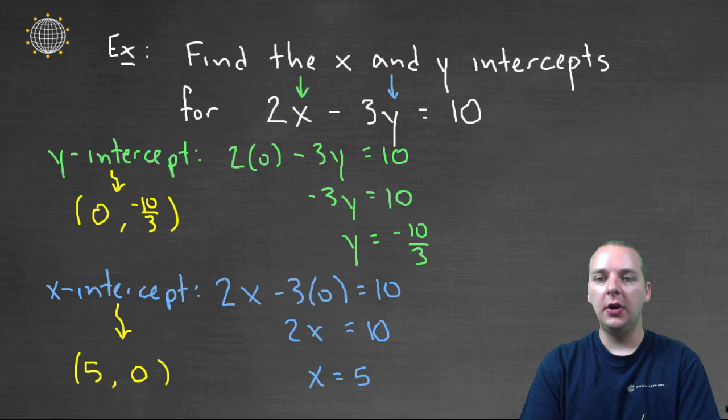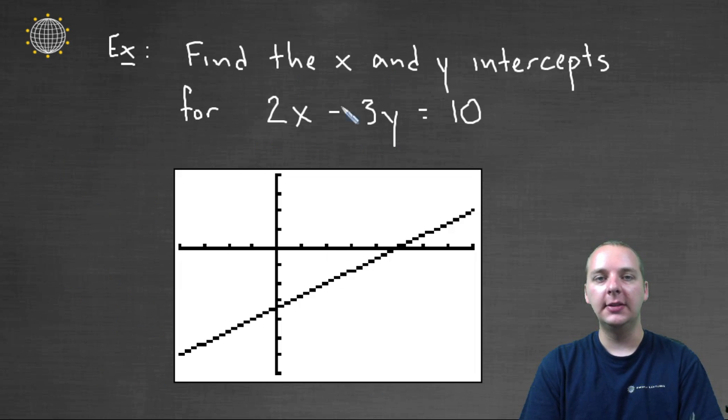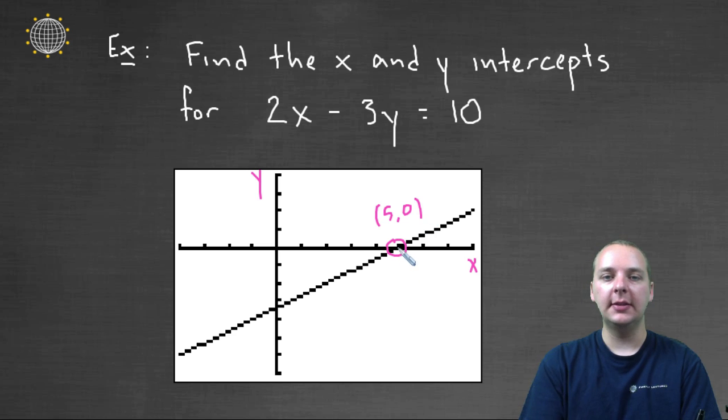So the last thing I want to show you in this video is, I actually went ahead and graphed this linear equation here, just to confirm the fact that we did get this correct. So here's the x and y axes. Look at where the graph crosses the x-axis right here. It crosses at one, two, three, four, five. So five, comma, zero, really was the x-intercept. And the y-intercept is somewhere between negative three and negative four. So right here, that'll be at negative ten-thirds.